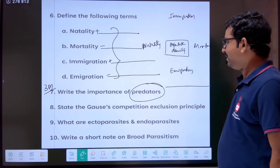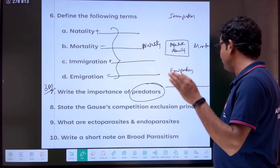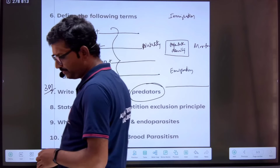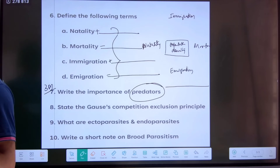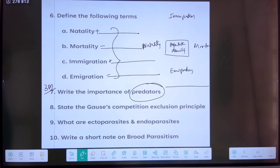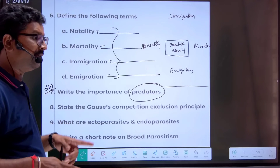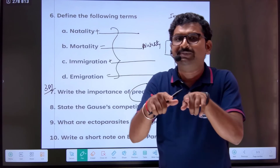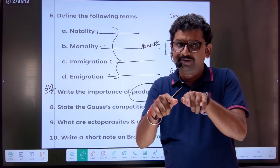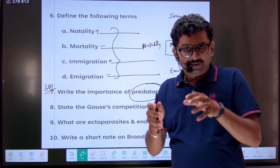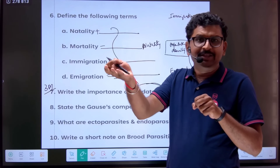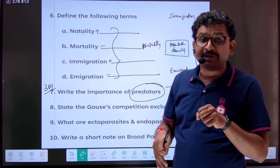Next: state the Gause competition exclusion principle with an example. Explain the model. Two closely related species competing for the same resource — the dominant one will always be able to survive. The superior species outcompetes the other.